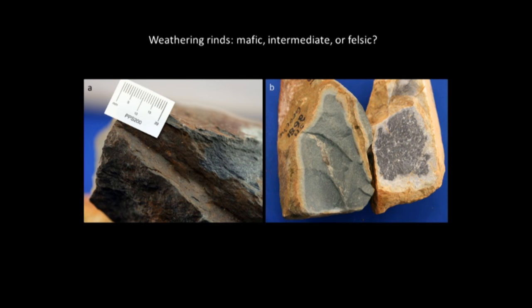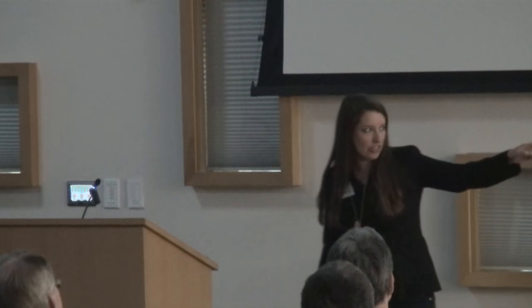Looking at the three weathering rinds side by side: Picture A is a mafic weathering rind — dark brown, and if you look at the broken fresh surface there's no light interior, just dark brown. In B, the rock on the left has a well-developed intermediate weathering rind with drab olive-brown on the outside and a greenish-gray lighter interior, though on lithics that lighter interior may or may not be present. The rock on the right shows a light gray-white creamy interior with patchy brown — that's the felsic weathering rind. The brown on the more felsic rind tends to be patchy.